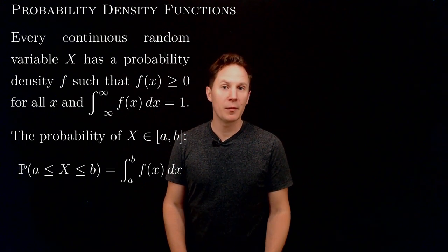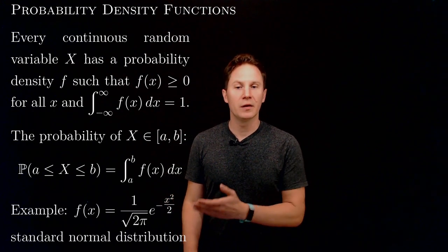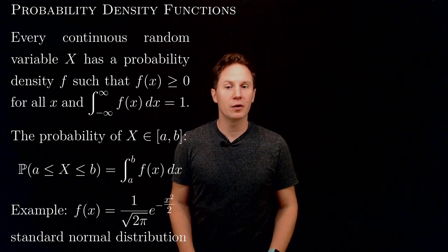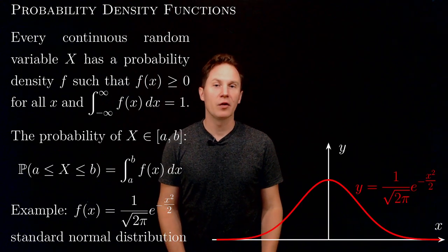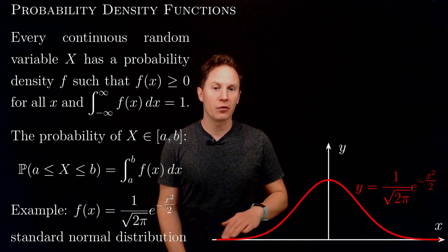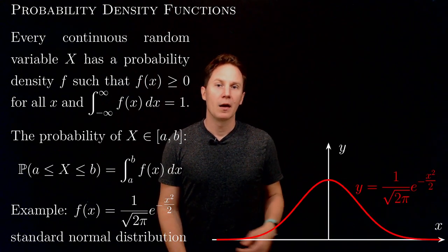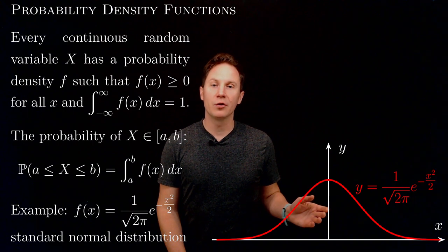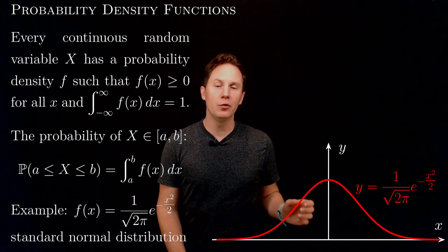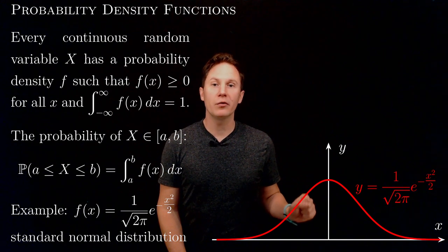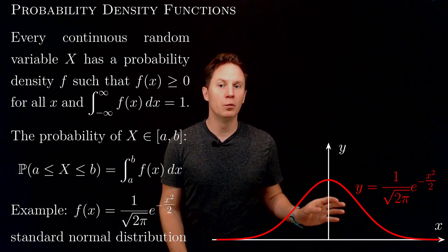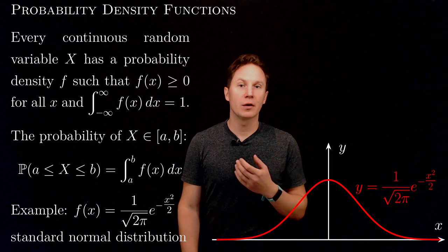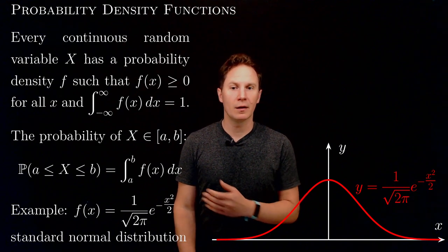The most famous probability density function is probably that of the standard normal distribution, called the Gaussian, and its graph has the famous bell-shaped curve. This function takes on positive values, and the area under the graph is equal to 1, due to the famous Gaussian integral.